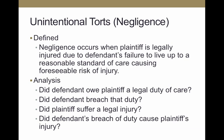Unintentional torts, or negligence, occurs when a plaintiff is legally injured due to a defendant's failure to live up to a reasonable standard of care, causing a foreseeable risk of injury. There are four elements to negligence: Was there a duty? Did the duty get breached? Did the plaintiff suffer a legal injury? And did the defendant's breach of duty cause the plaintiff's injury? In other words: duty, breach, causation, and harm.